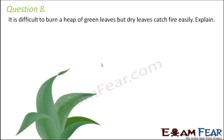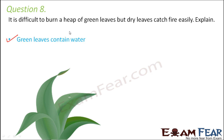Question number eight: it is difficult to burn a heap of green leaves, but dry leaves catch fire easily — explain. Green leaves contain moisture, and wherever water is present, it has a cooling effect, which reduces the temperature. This makes it difficult to achieve the ignition temperature.